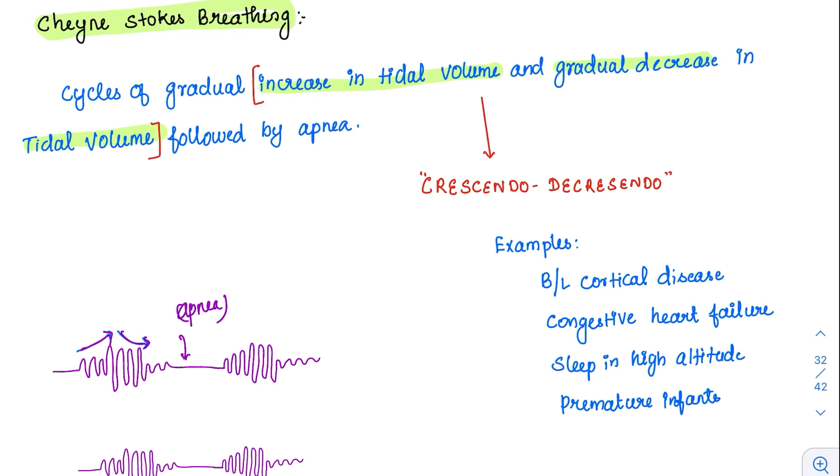This increasing and decreasing pattern is called the crescendo-decrescendo pattern. There is an increase and decrease. So whenever you see this word in the question, don't read further. You can always go for Cheyne-Stokes breathing.